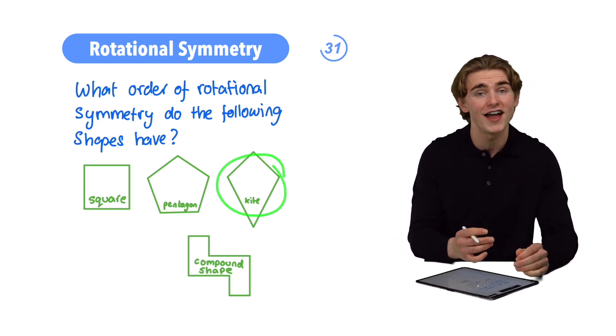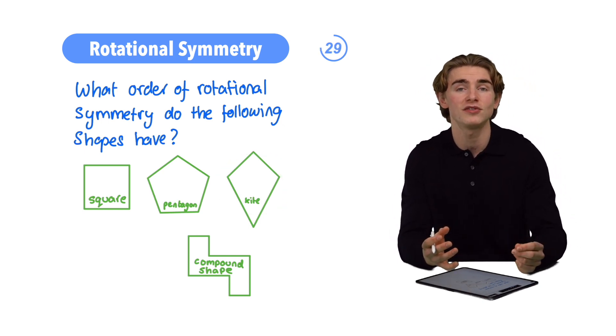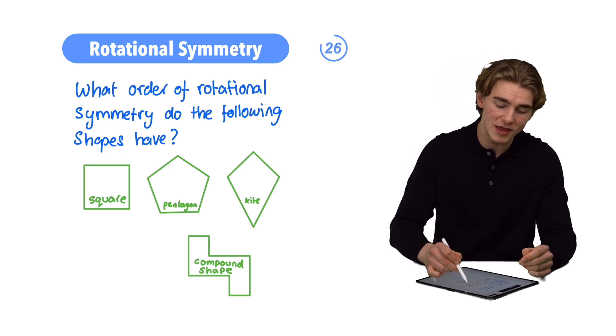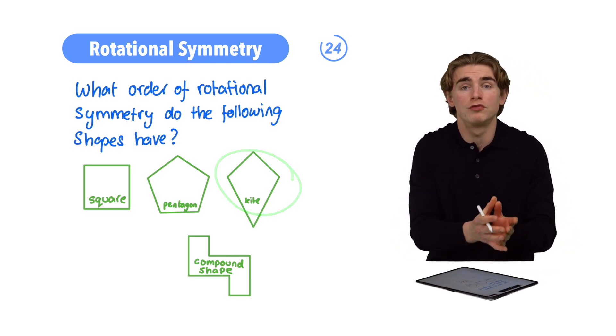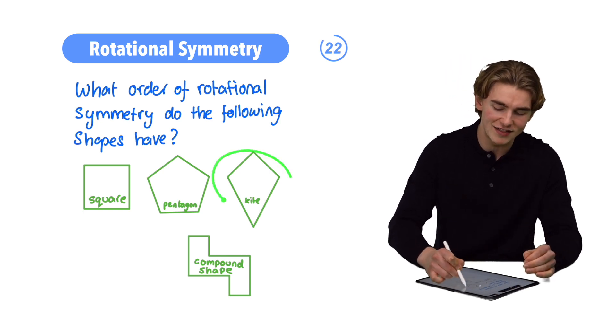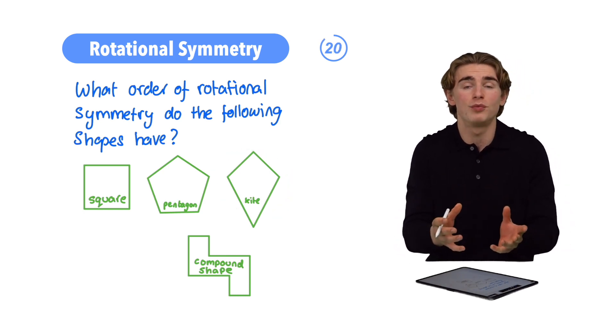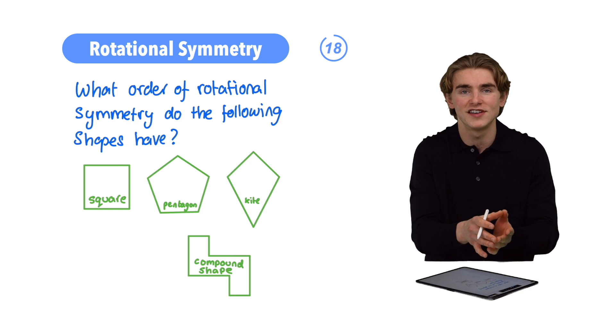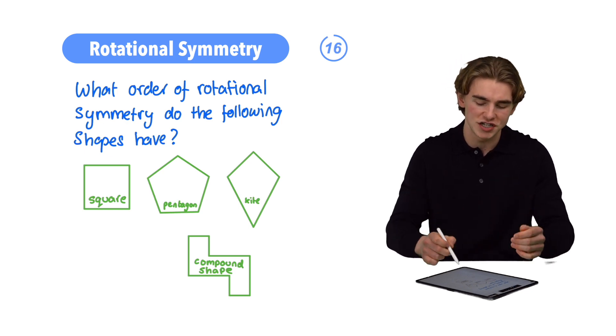Next up, our kites. Our kites, we would actually say, has rotational symmetry of order one, and that's because there's actually going to be only one version of this, one rotation of this, which looks exactly the same as the start point, and that is if we rotated it a full 360 degrees. That's the only way to get a shape which looks like this.